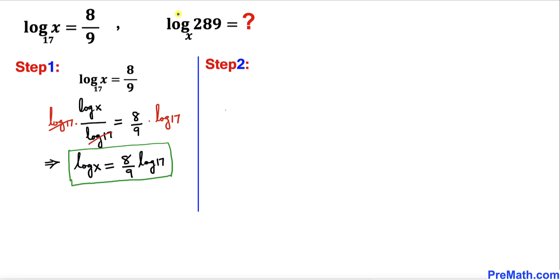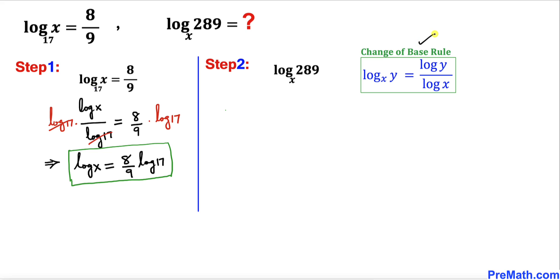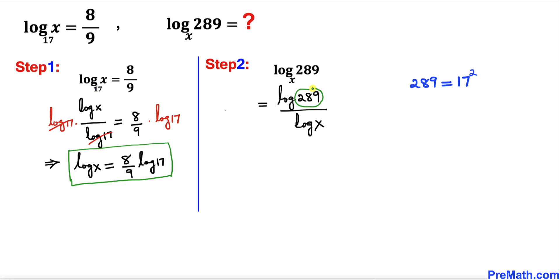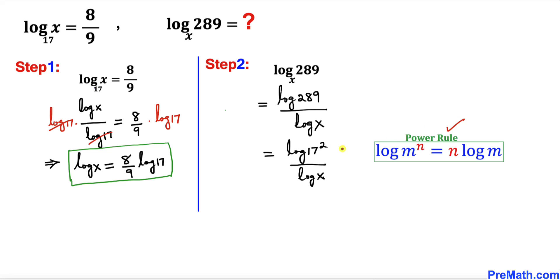Now let's focus on the expression log of 289 with base x. Using the change of base rule again, this can be written as log of 289 divided by log of x. Now, 289 can be written as 17 squared, so I've replaced 289 by 17 squared. Applying the power rule, we can move the exponent to the front, giving us 2 times log of 17 divided by log of x.